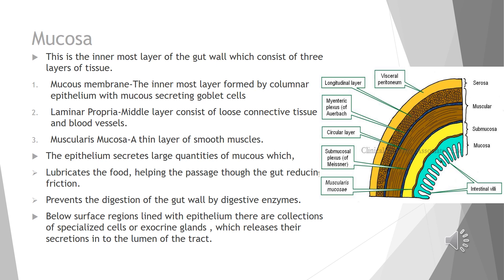The mucosal layer is the innermost layer of the gut wall and is divided into three layers. First is the mucosal membrane, formed of columnar epithelium, which is the innermost layer and contains mucus-secreting goblet cells. Second, outer to the mucosal membrane, is the lamina propria — the middle layer — which consists of loose connective tissue and blood vessels. Third and outermost is the muscularis mucosa, which contains a thin layer of smooth muscles.